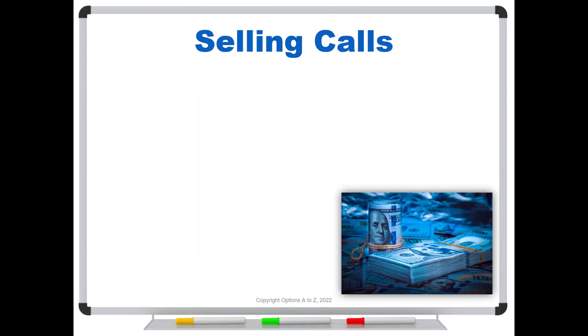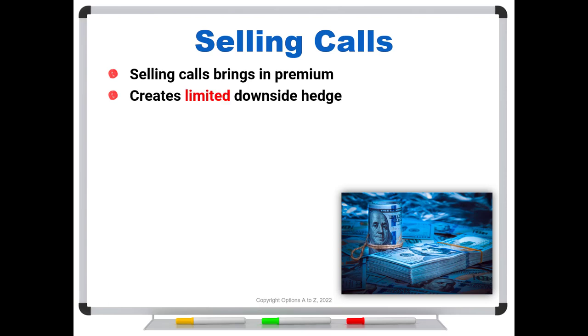So first off, why would we be selling calls, especially during high volatility? Well, selling calls, or puts for that matter, brings in premium. You get paid for being the seller. And that cash that you receive creates a limited downside hedge. It's limited to the amount of cash that you receive. So if you grab five bucks from the sale of a call, you've got a $5 downside hedge, and that's it. If you sell it for seven, you've got a $7 downside hedge. So that's what it means to be a limited downside hedge.